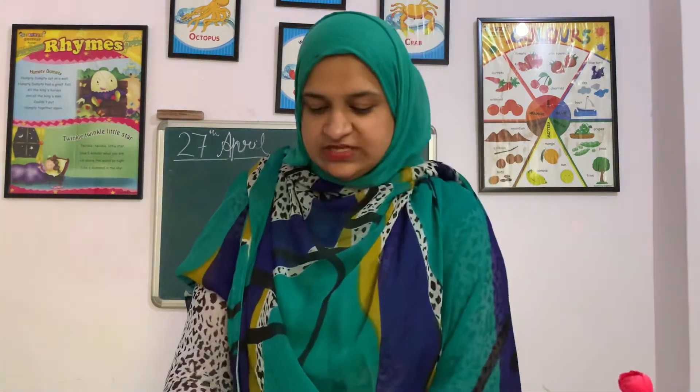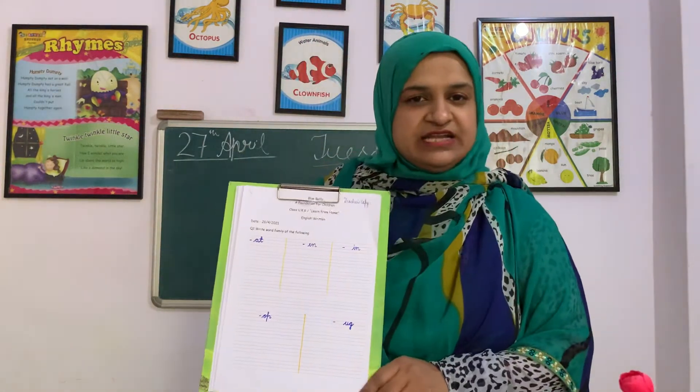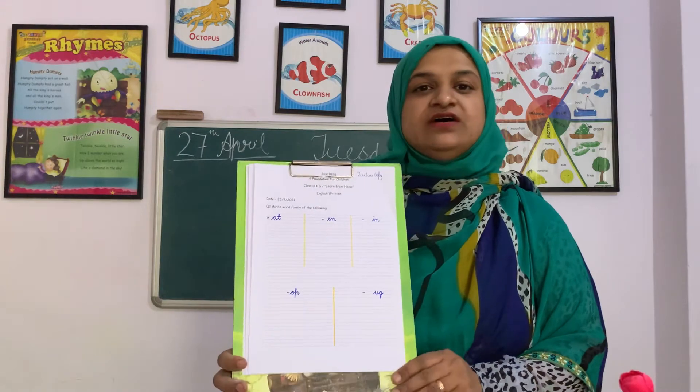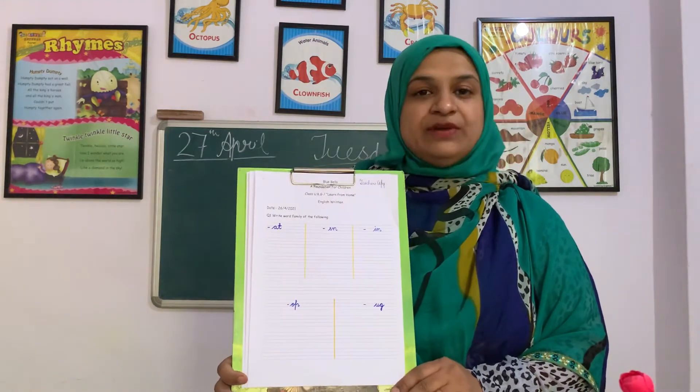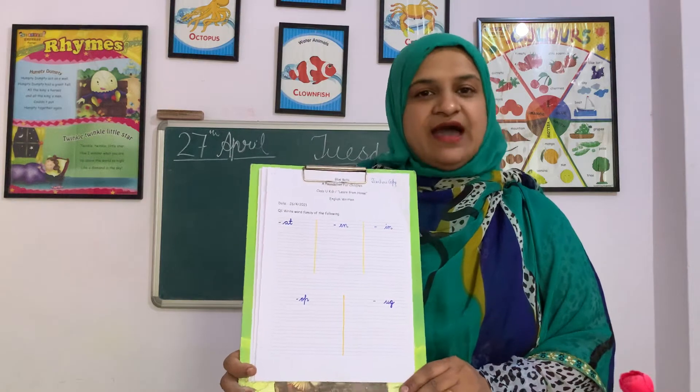We will write words — three words of each. You can have a look at your worksheet. This is our English worksheet. We will write words of the word family — word family of vowel sounds: A, E, I, O, and U. What these words are and how we are going to write them, we will discuss in the next coming video.